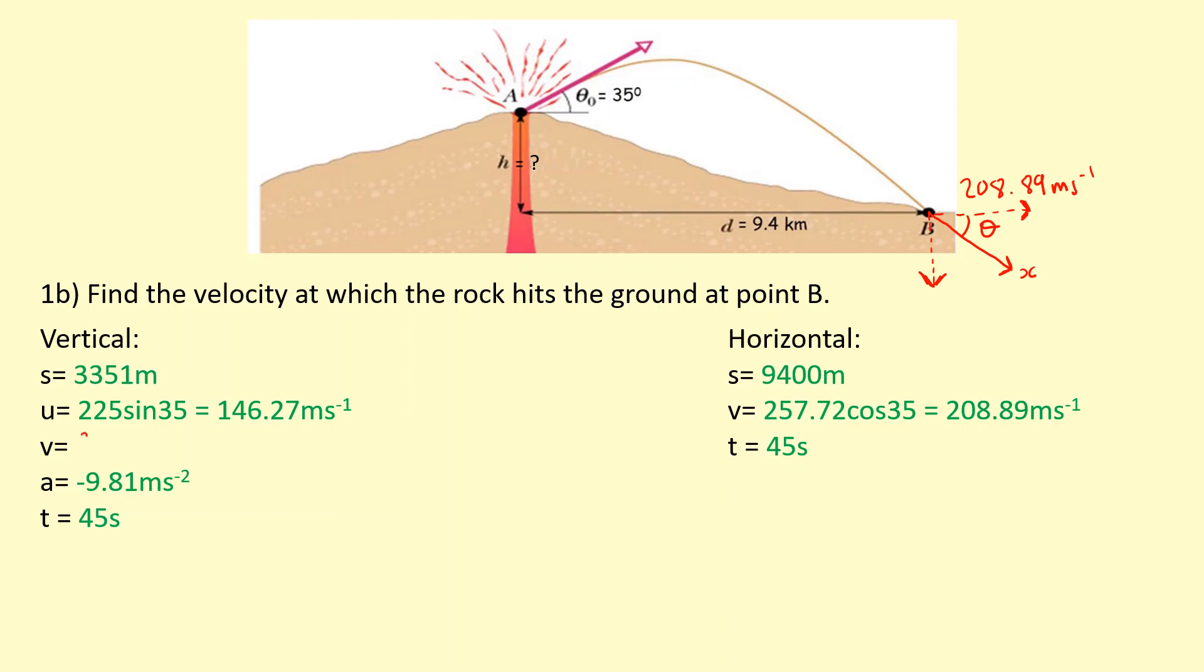We can use v equals u plus at. So the initial upward vertical speed was 146.27 positive, which is upwards, plus minus 9.81 times 45. You get in this case minus 295.18, so it's going downwards at this speed, 295.18, which is what we expect.